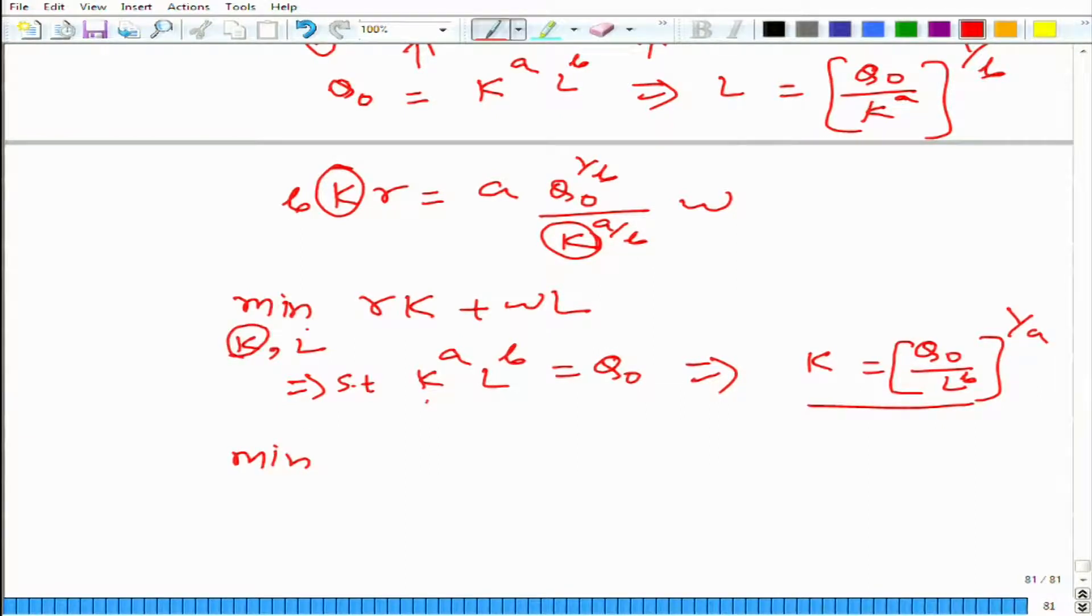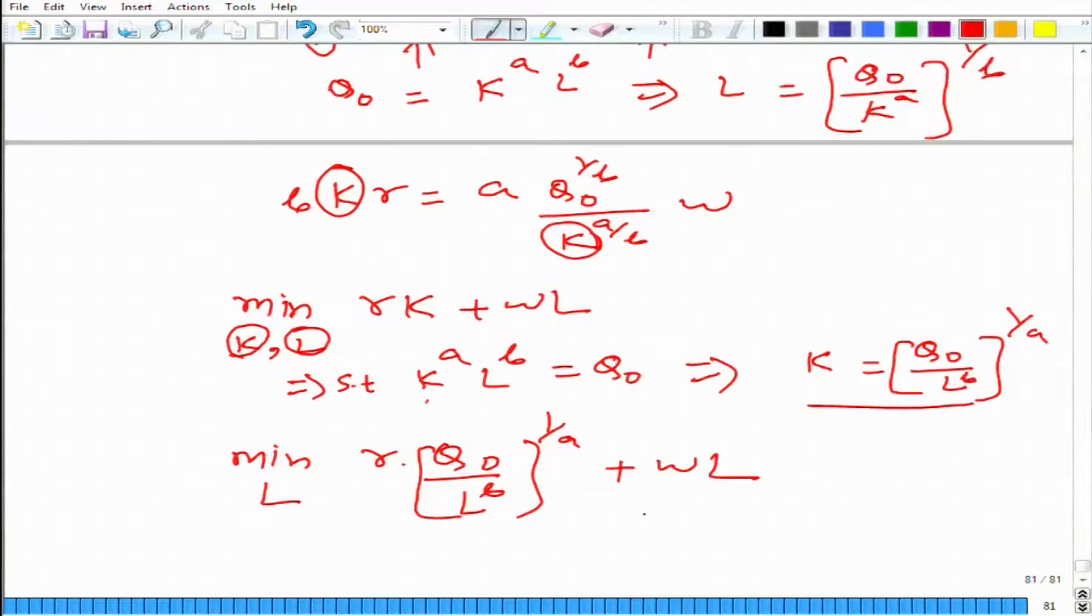Now, instead of minimizing with respect to k and l, we minimize only with respect to l, and r times k we can get from here. This is one equation which we have to minimize with respect to l. We can get l as a function of q naught, l as a function of r, w, and q, and k is also a function of r, w, and q.